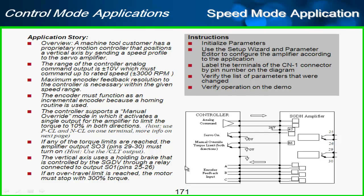This is a vertical axis that uses a holding brake, and we'll be controlling the holding brake through a relay connected to output one, pins 25 and 26. Finally, this is a vertical application, so if the motor hits an over travel we'd like it to stop with maximum torque and leave the motor enabled.